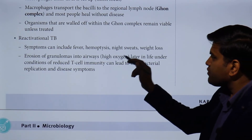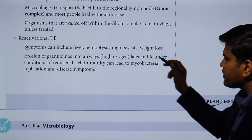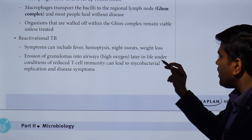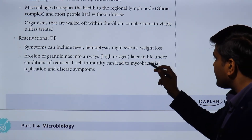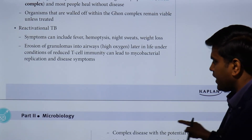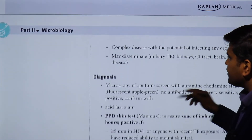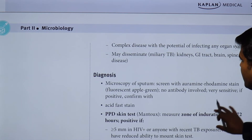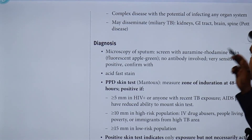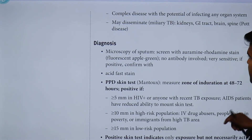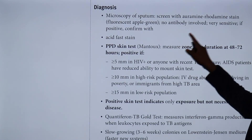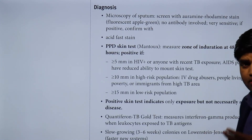Reactivation symptoms include fever, hemoptysis, night sweats, and weight loss due to erosion of granulomas into the airway. Later in life, under conditions of reduced T-cell immunity, Mycobacterium tuberculosis can replicate and cause disease. In complex disseminated disease, any organ system may be involved — kidneys, urinary tract, brain, and vertebrae.